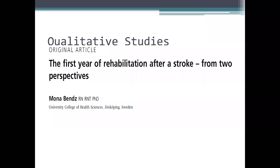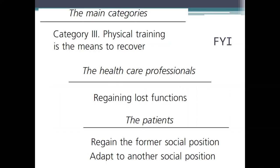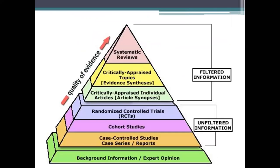We live in a quantitative world but it also has qualitative categories. A qualitative study on the first year of rehabilitation after stroke from two perspectives looked at healthcare professionals — regaining lost functions — and patients — their ability to regain their former social position or adopt a new one. We may look at a study that's beneficial to society but not to the person in the study. If we prove an ALS medication doesn't work, that's great for society, but it doesn't help the people in the study.